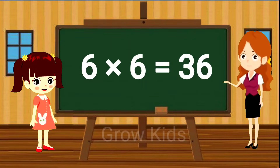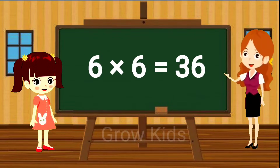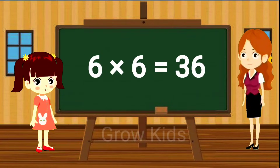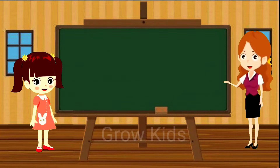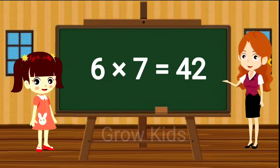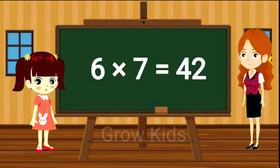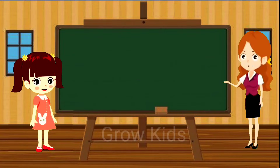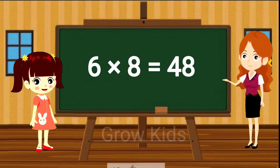Six fours are twenty-four. Six fives are thirty. Six sixes are thirty-six.